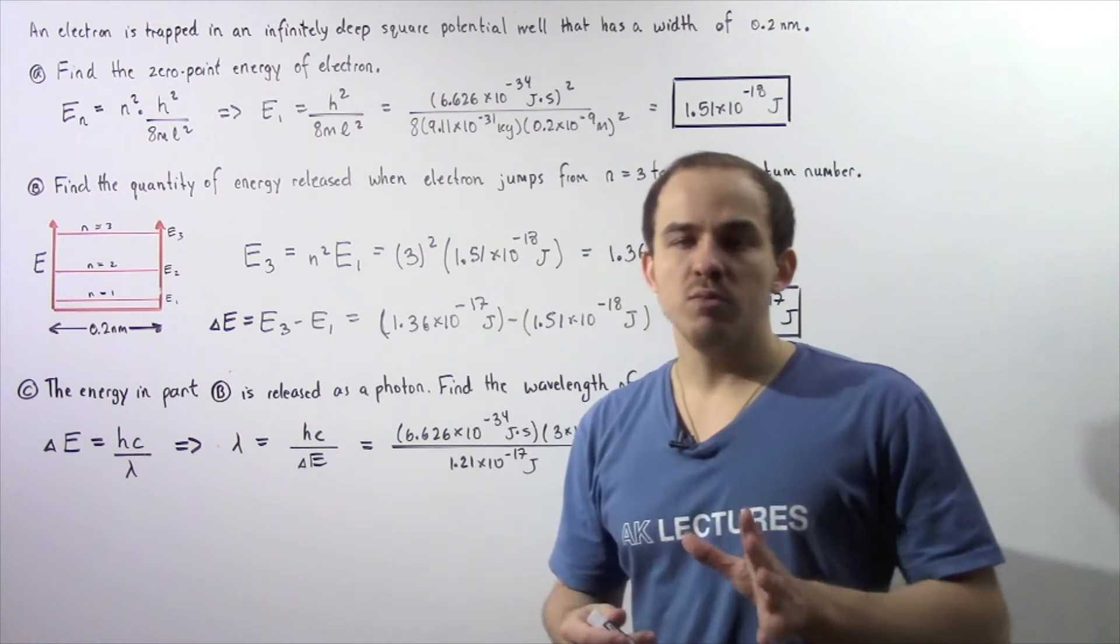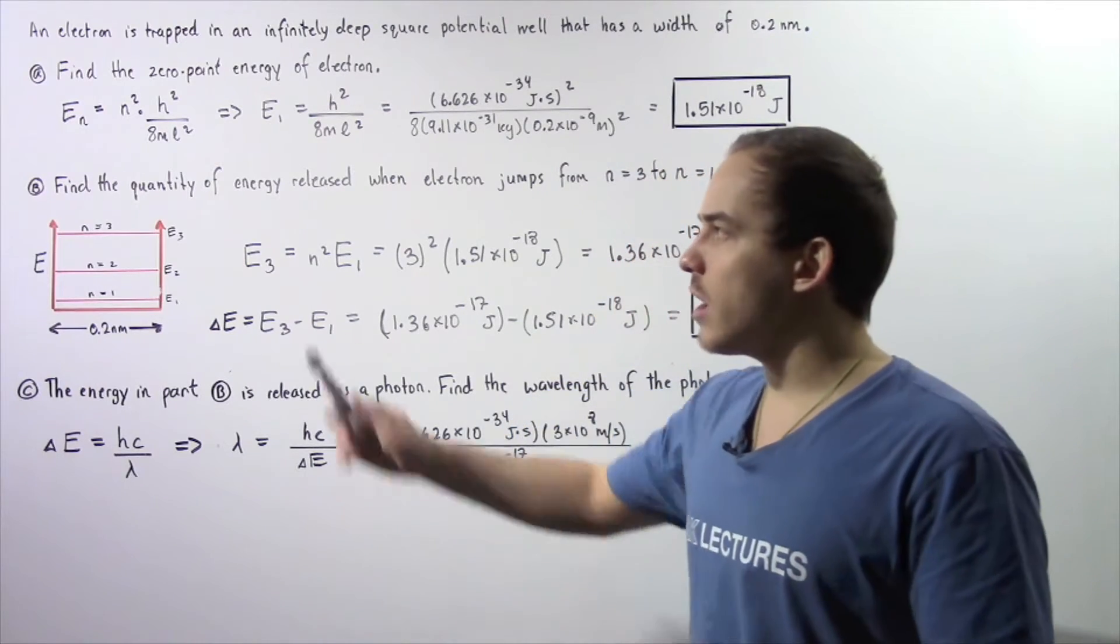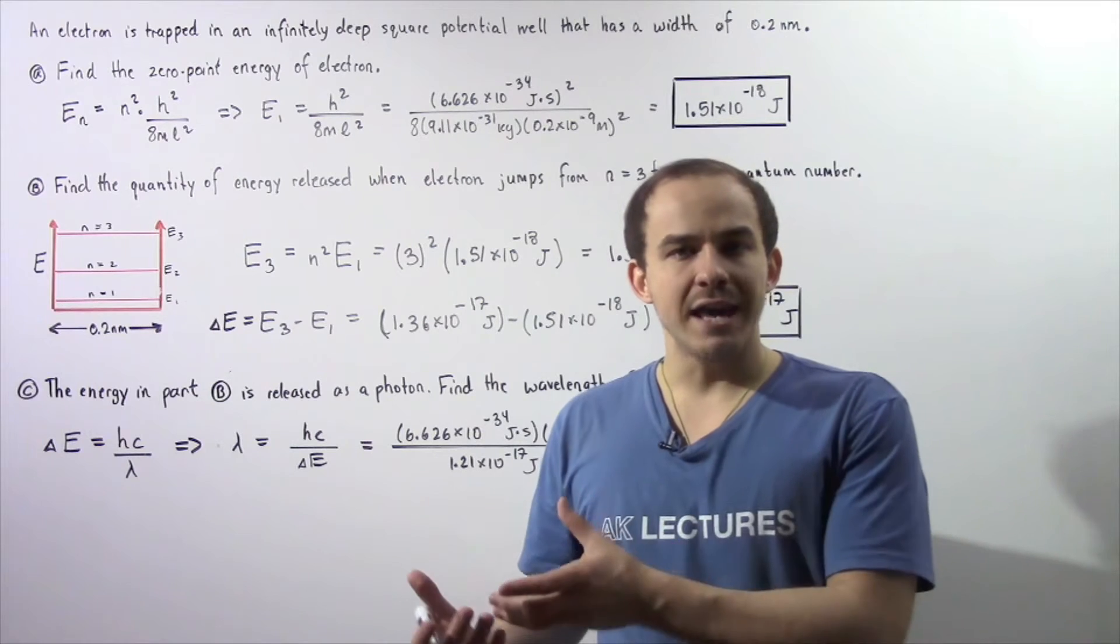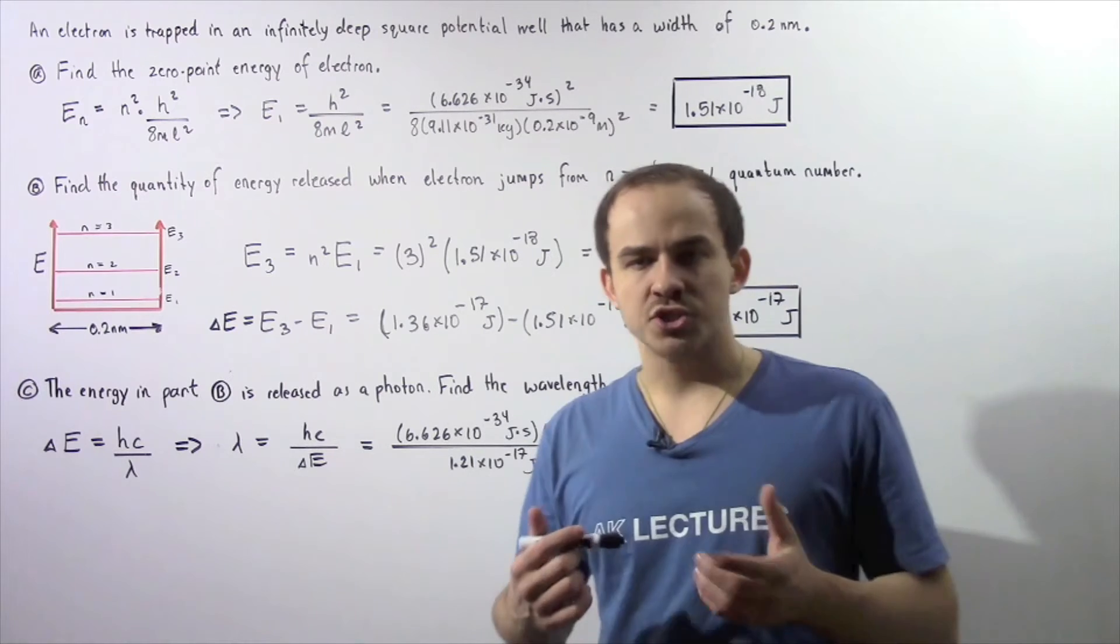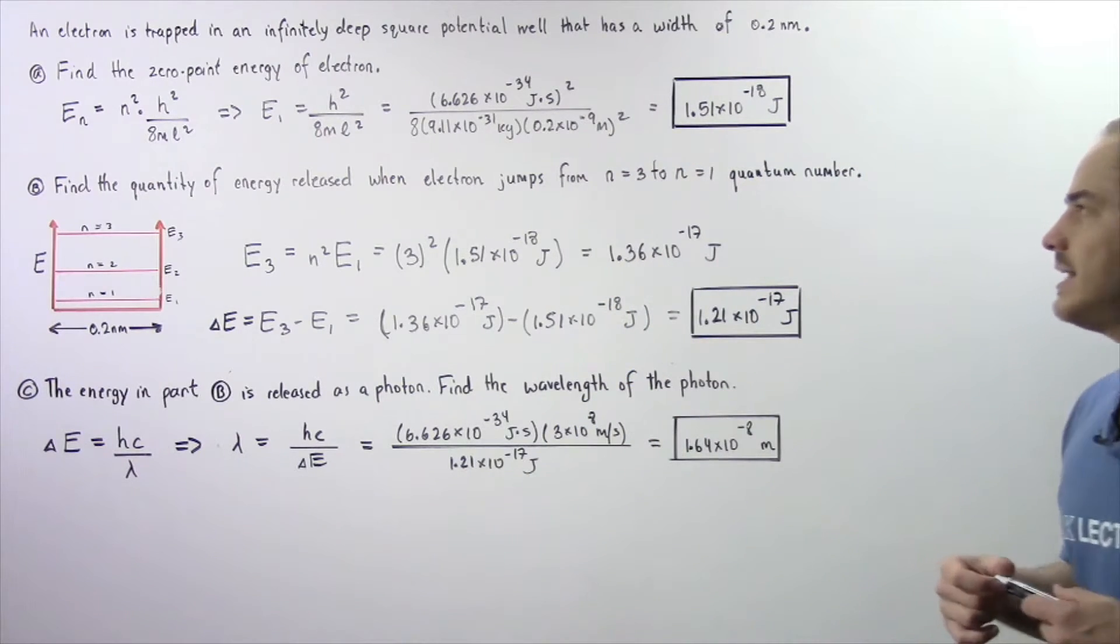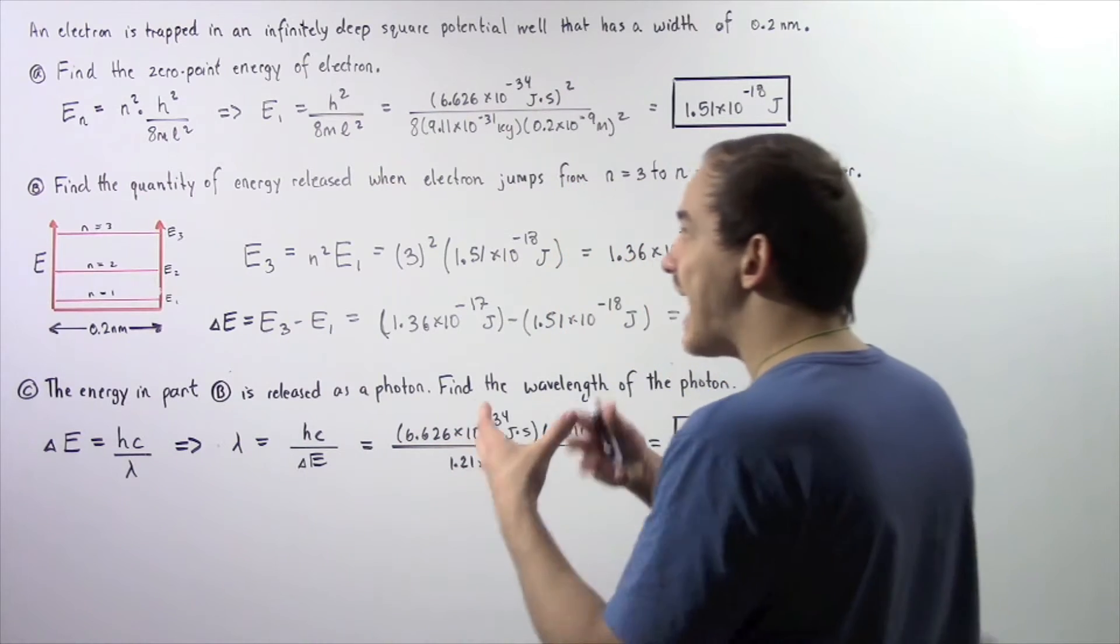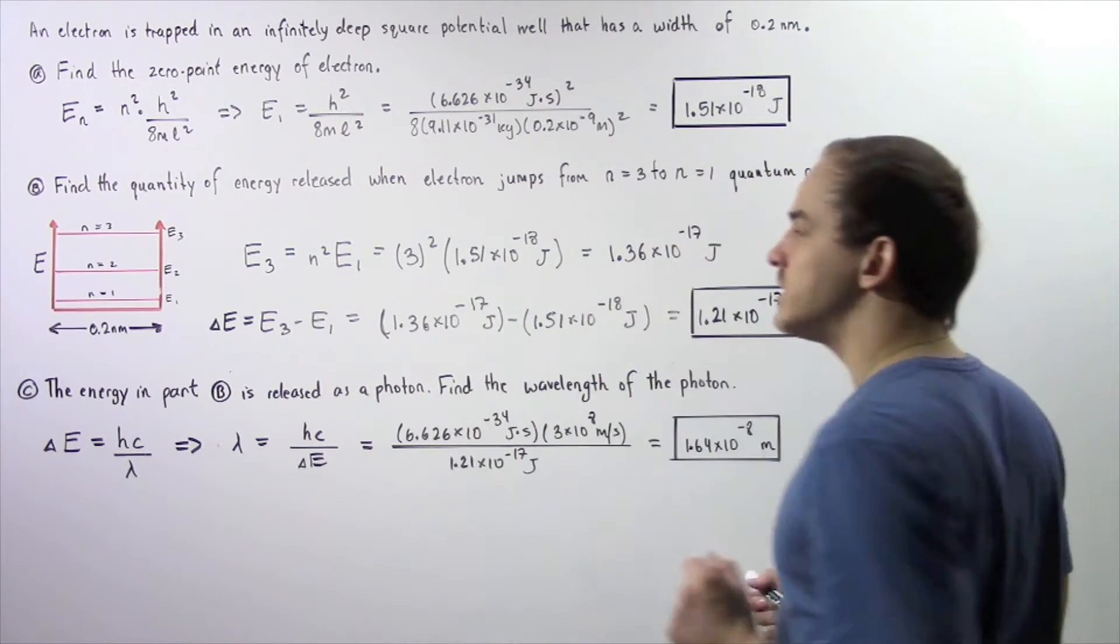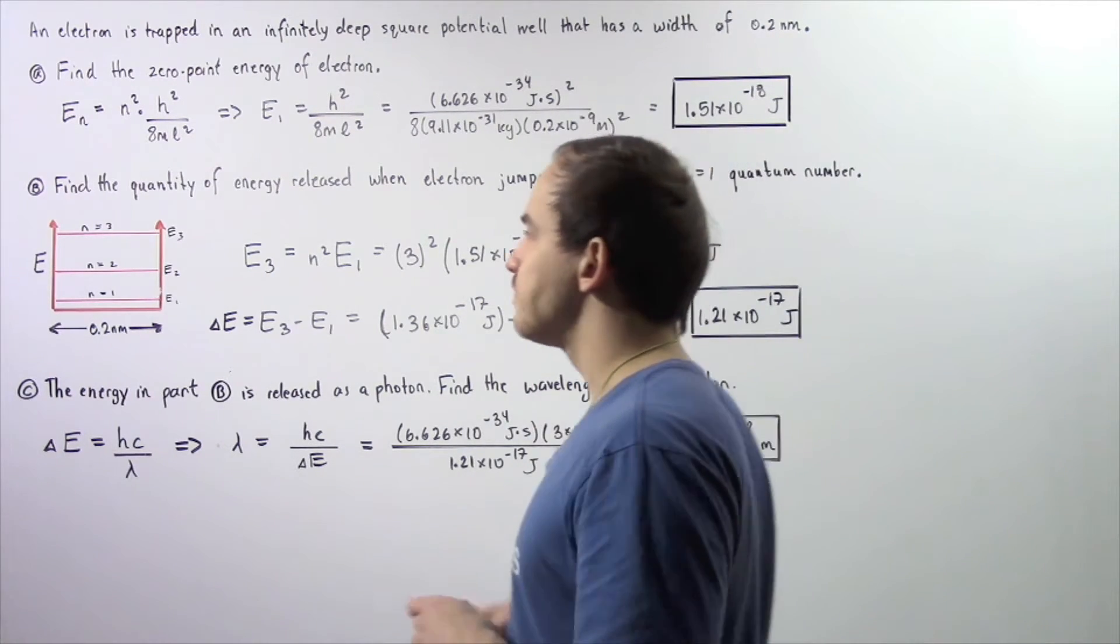In part A, we want to calculate the zero-point energy of our electron. In part B, we want to find the quantity of energy that is released when the electron jumps from quantum number n equals 3 to quantum number n equals 1. And in part C, assuming that the energy released in part B is released in the form of a photon of light, we want to find the wavelength of that photon of light.